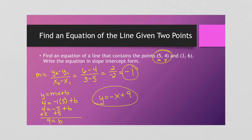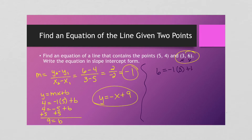I want to show you something — I want to do this problem again, but instead of using (5,4), I'm going to use (3,6). This is our x, this is our y, and I'm still using -1 for our slope. So I've got 6 = -1(3) + b. 6 = -3 + b. Add 3 to both sides — either way, I got that 9 was our y-intercept. So that's why it really does not matter which point you use to solve for your b, as long as you do your math right.